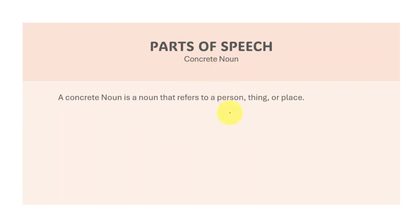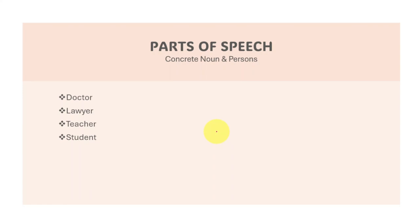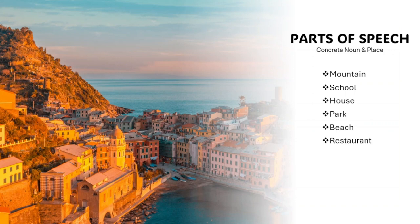We also have the concrete noun — they refer to a person, thing, or place. For persons: father, mother, brother, sister, doctor, lawyer, teacher, student. For things: computer, books, car, table, phone, dog, fish, cat. For places: mountain, school, house, park, beach, restaurant.